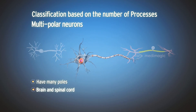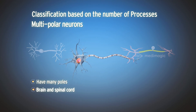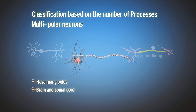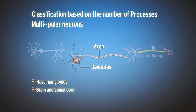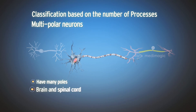Multipolar neurons have many poles, and the neuronal processes arise from these poles. They have several dendrites and one axon. The neurons in the brain and spinal cord are multipolar.